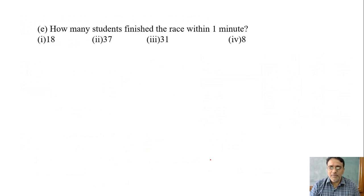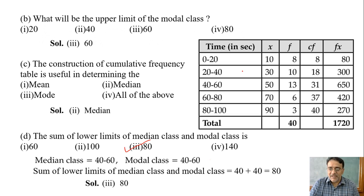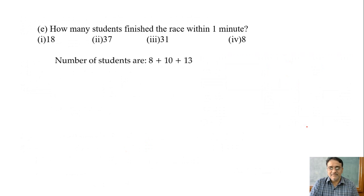So now the last question. How many students finished the race within 1 minute? Within 1 minute means within 60 seconds. So it means 8 plus 10 plus 13 equals 31. So correct option is the third option. See, only 5 questions will be asked and you have to attempt any 4. In this table you can make a lot of questions. Even for the mean, mode, median you can ask. 4 options will be there. Here how many students finished the race within 1 minute? How many students finished the race after 1 minute? Like that many questions can be formed.